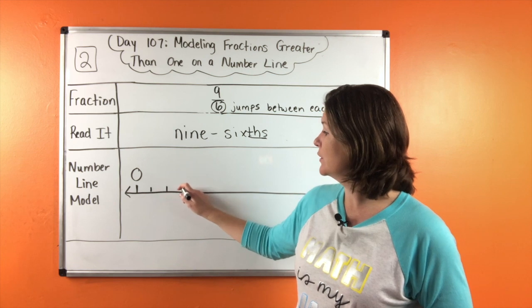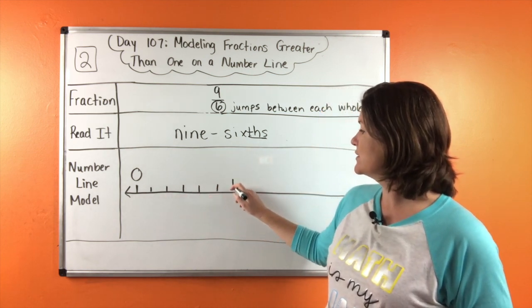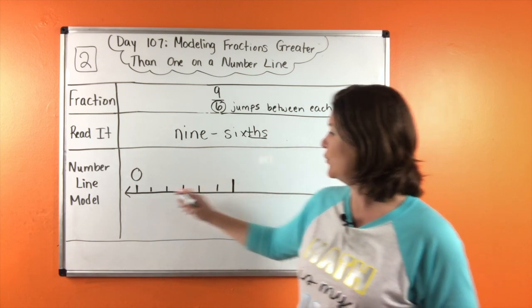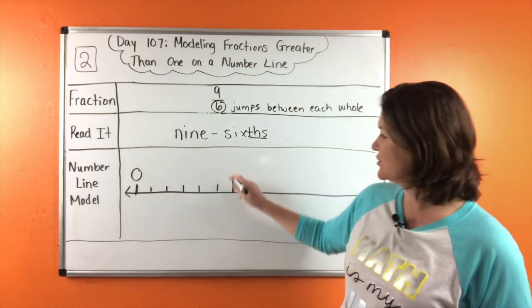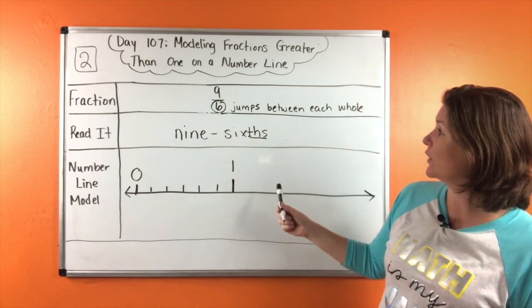And we need six jumps until we get to one. One, two, three, four, five, six. I'm going to make this a little bit more bold. On that sixth jump, we are at one. But we need to keep going a little bit more.